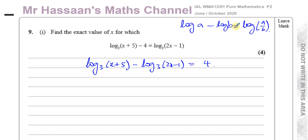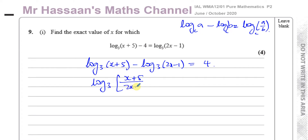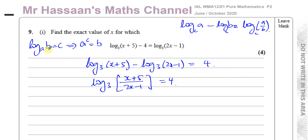The division law states that log A minus log B can be expressed as log of A divided by B. If they're both to the same base, you can combine them together as a division. So I can write this as log to the base 3 of (x + 5) divided by (2x - 1) equals 4. Then I can use the definition of what logarithms mean: log to the base A of B equals C can be rewritten as A to the power of C equals B.